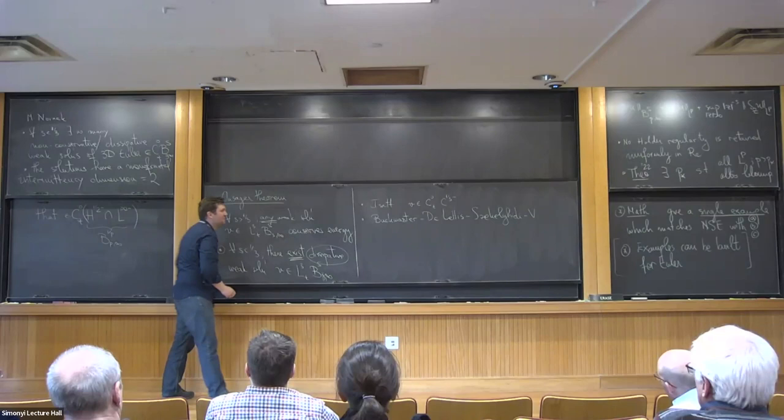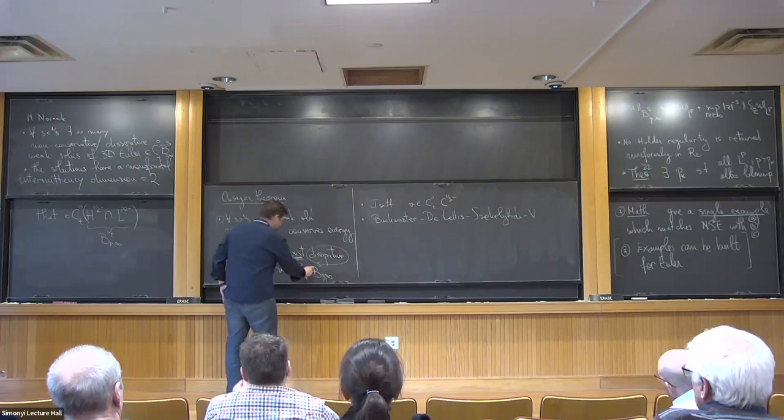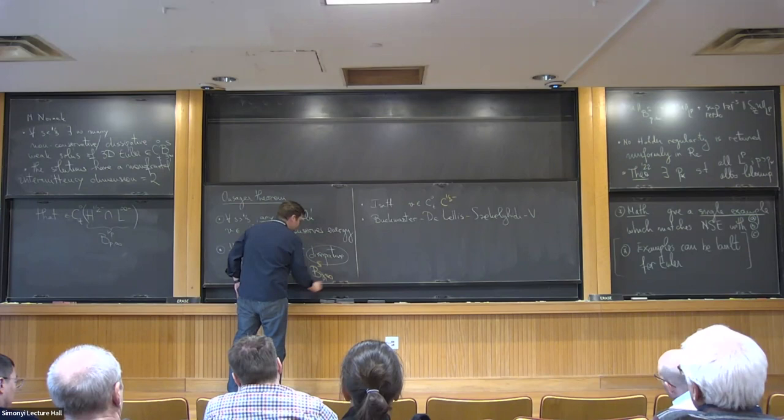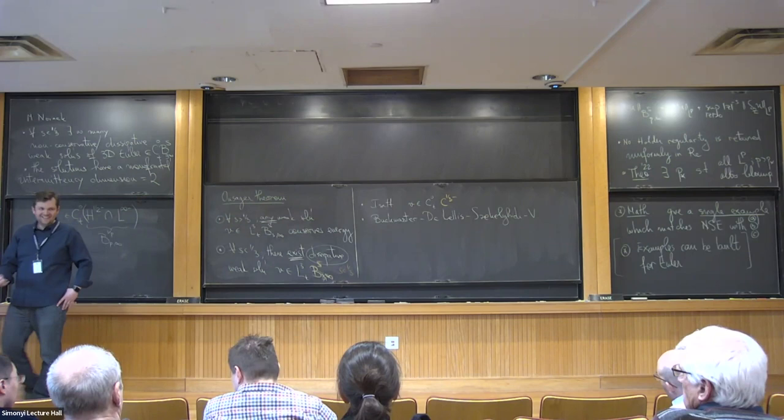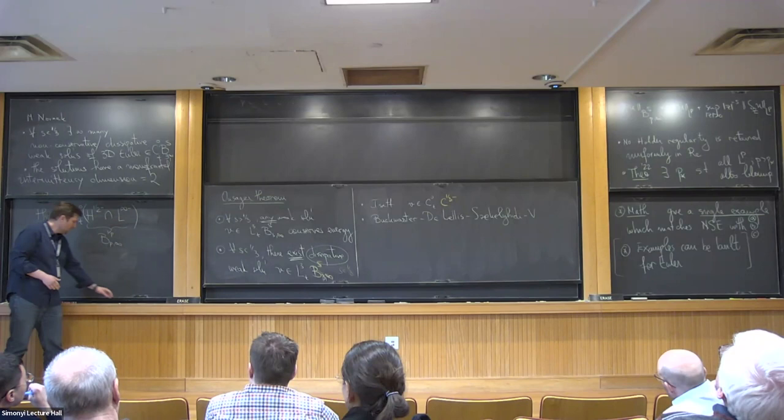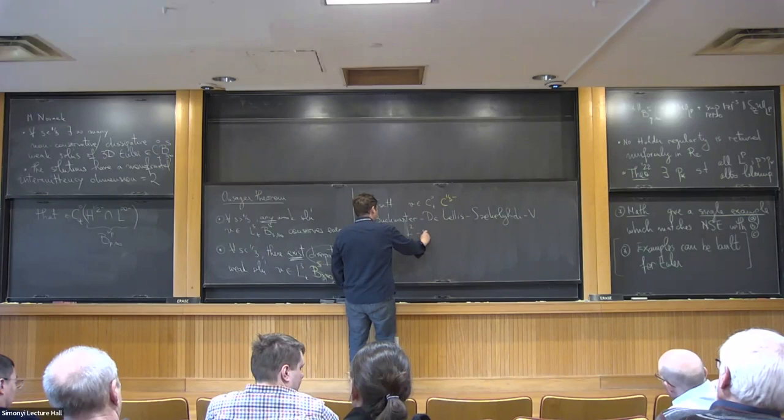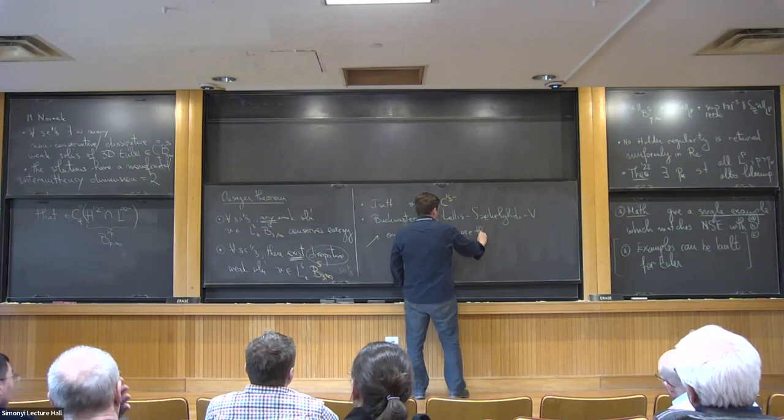C^{1/3-} they have compact support. They're not dissipative. And actually this was fixed. Dissipative solutions were constructed immediately after. And Phil's proof was streamlined by Tristan, Camillo, and Laszlo. We basically obtained the same result, but with this word dissipative. Which just means that the energy is decreasing. Because of weak-strong uniqueness that Camillo mentioned a couple days ago, that's actually quite important. So there's something a bit too strong about this theorem in my perspective.